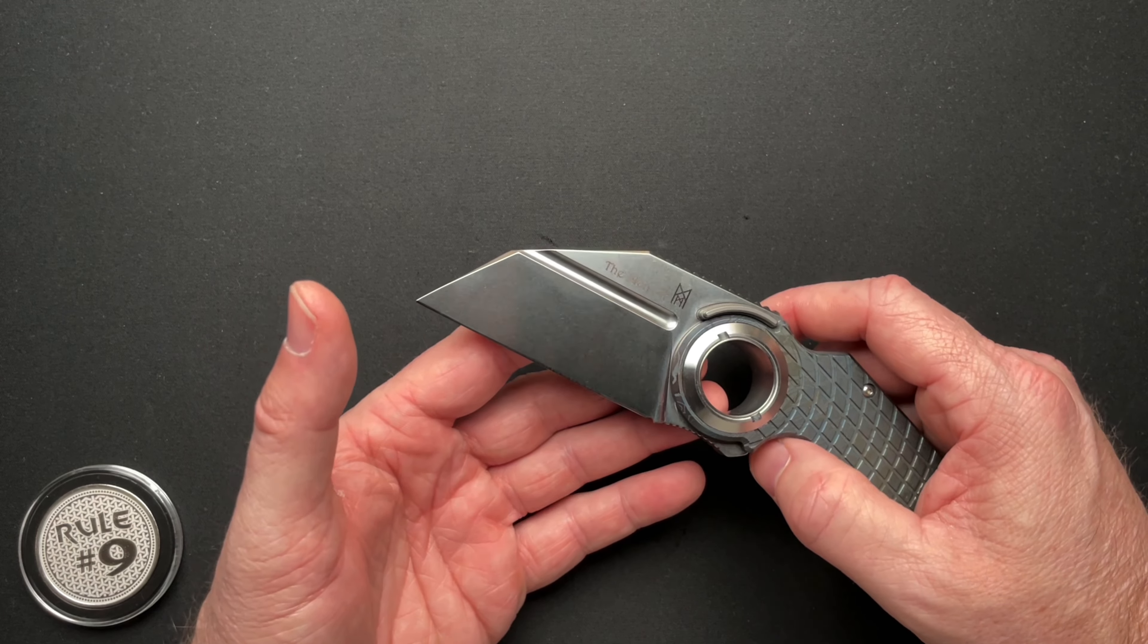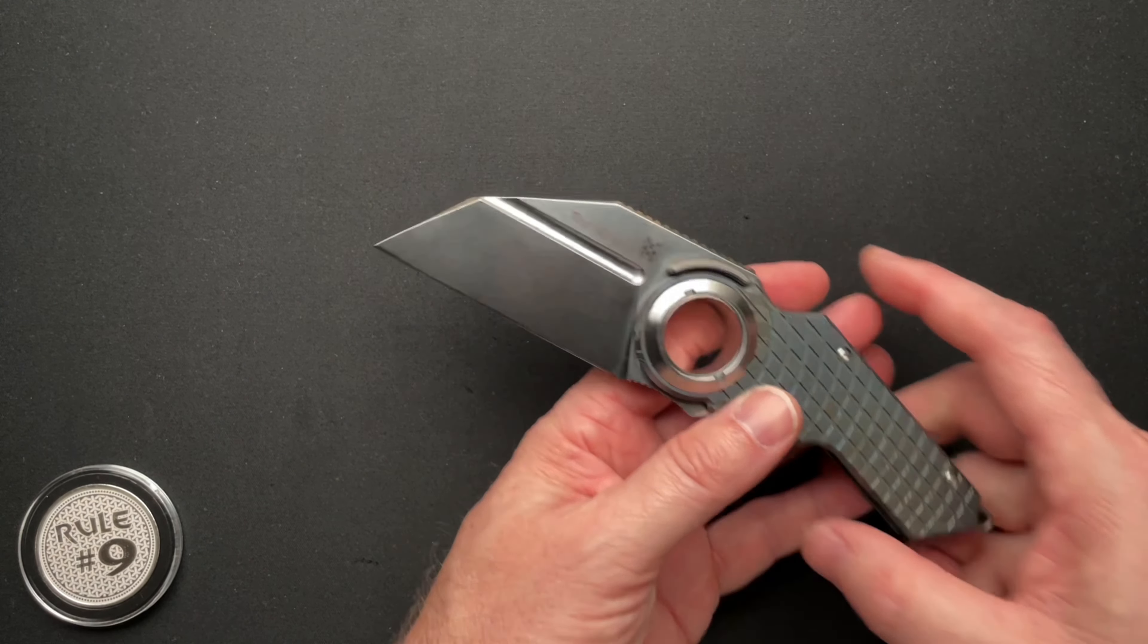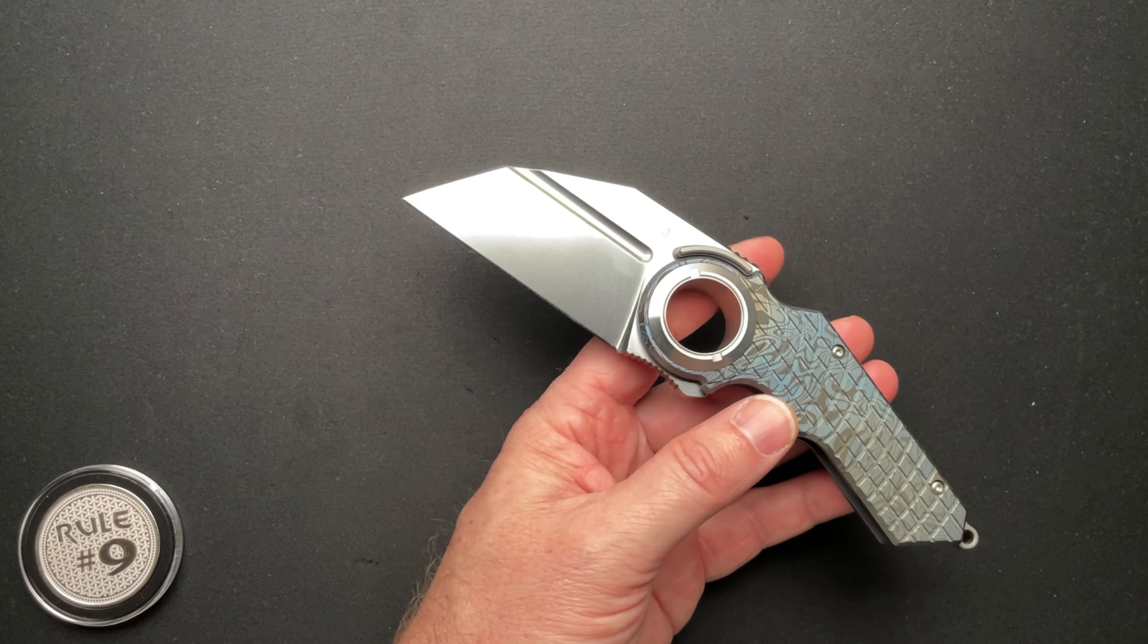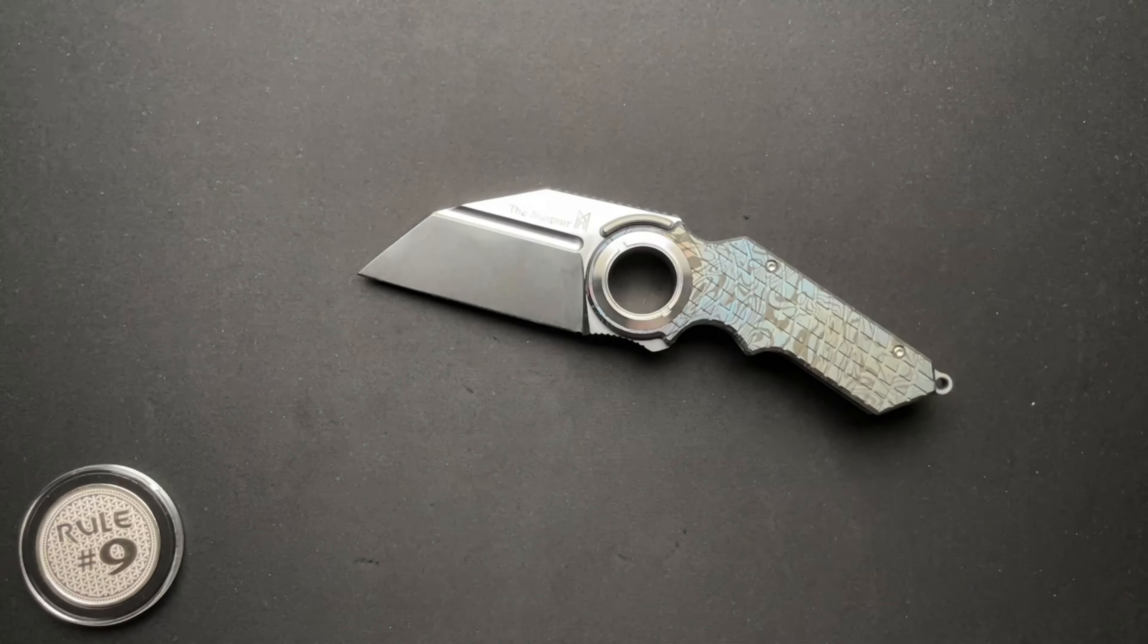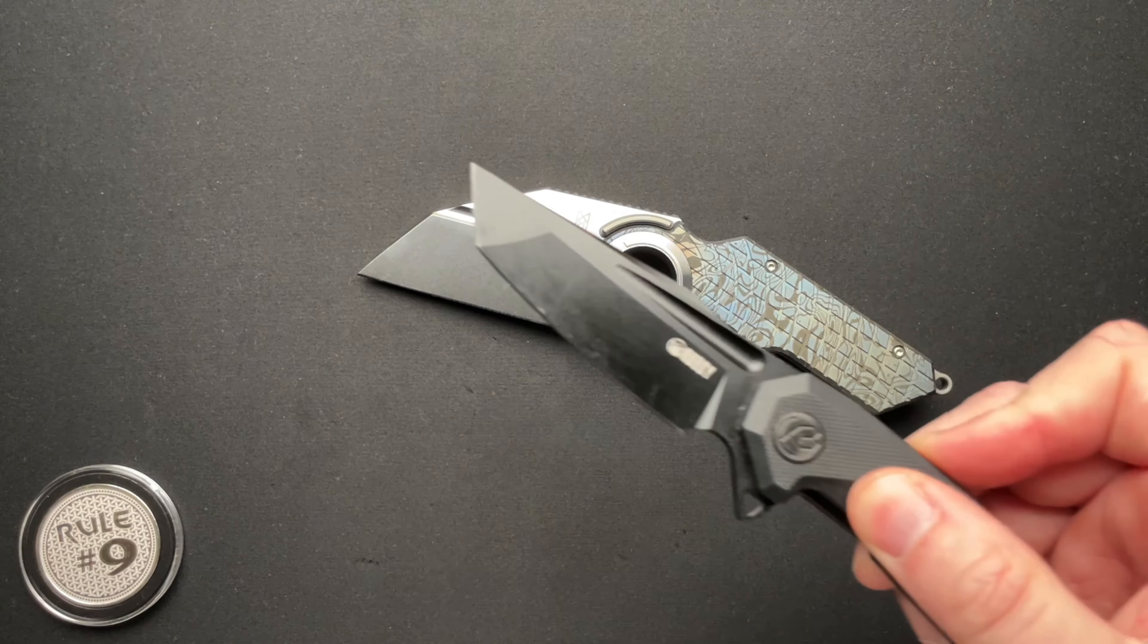Blade steel is CPM D2. Now, a lot of times you got to be careful when it says D2, like on this Kubi, where it clearly says D2, right?